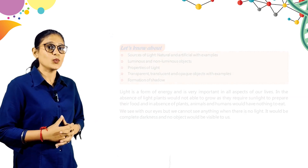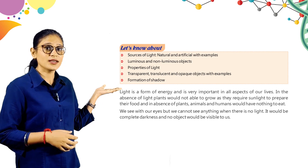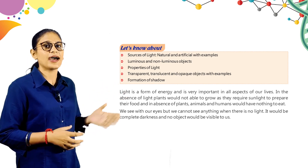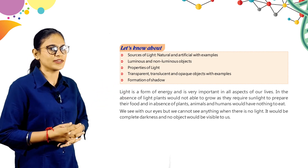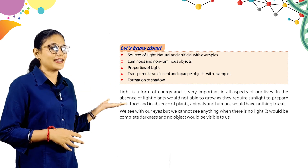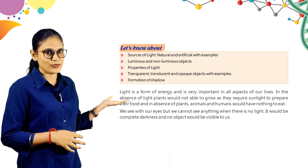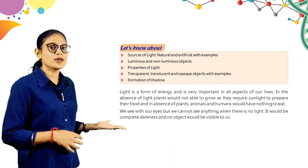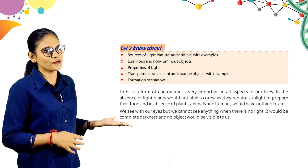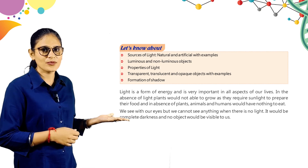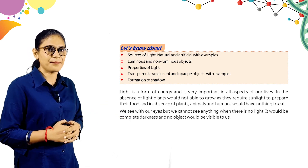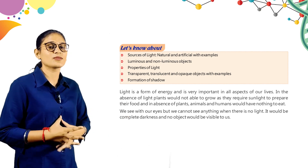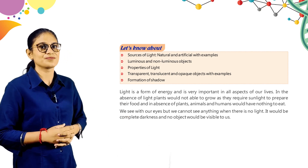Now let's know about the topics we'll cover. Here are sources of light — natural and artificial with examples, luminous and non-luminous objects, properties of light, transparent, translucent and opaque objects with examples, formation of shadow — these are the dozen topics we will discuss in this chapter.